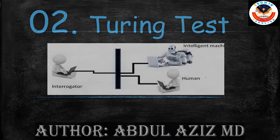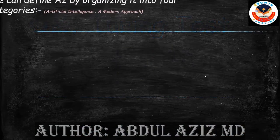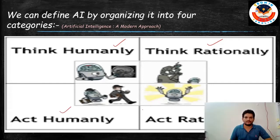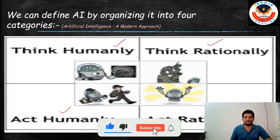Before looking at the Turing Test, first we need to know about the four categories of Artificial Intelligence. Here we have Thinking Humanly, Thinking Rationally, Acting Humanly, and Acting Rationally. These are the four categories of Artificial Intelligence. I already have a video explaining these four categories — if you have not watched it, the link is in the description.